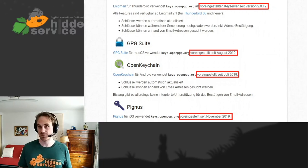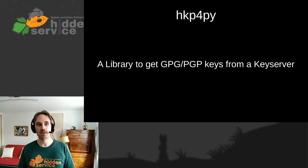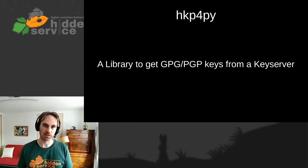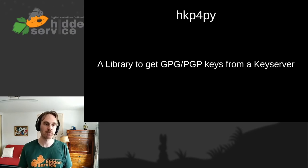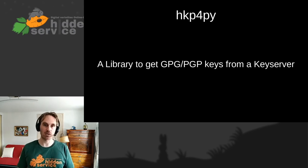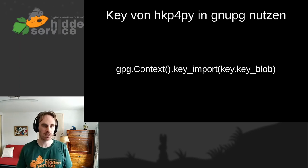We're not the only ones having these problems. For example, there's HKP4Py. HKP is the name of the protocol used to query keys from the servers. The small Python module can talk directly to the key servers and download the keys using the HKP-based protocol. It's very simple — ask these servers and download this list of keys — and then you can import them directly into GPG.